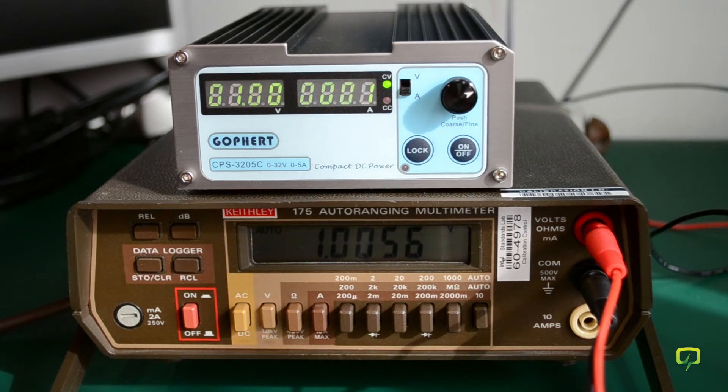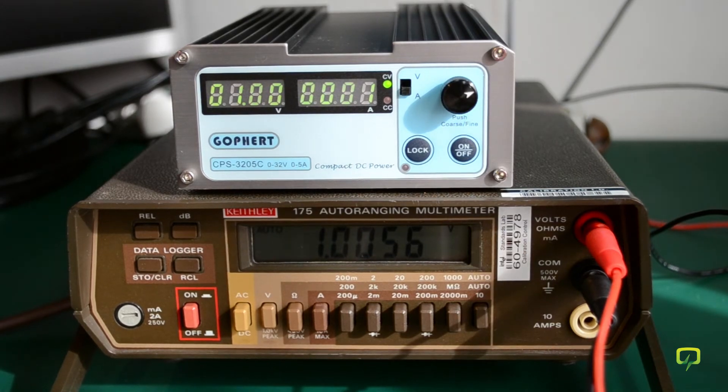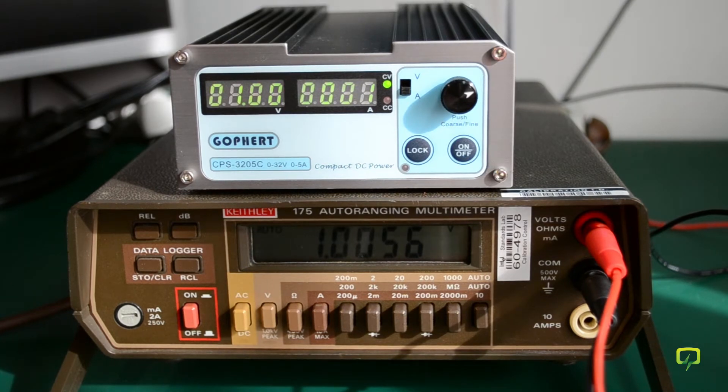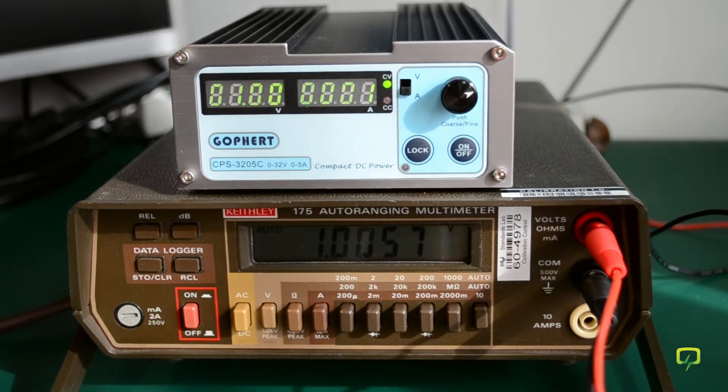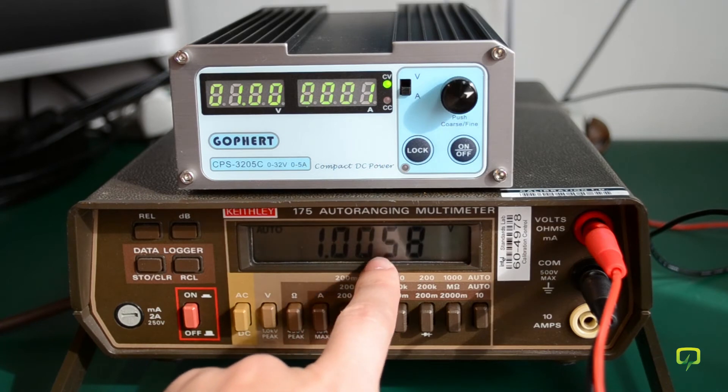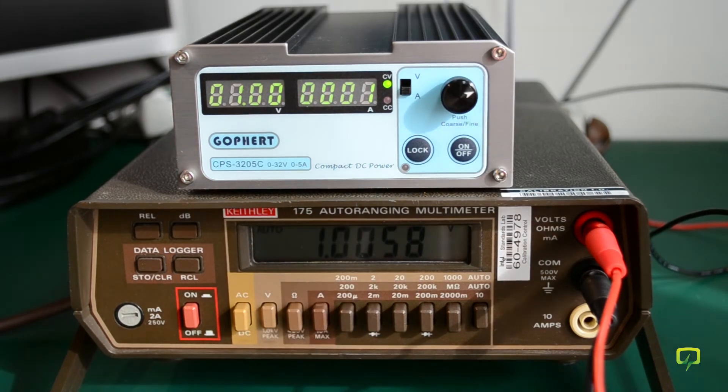Now you have to adjust the knob to set the output voltage to 1.005 volts. I'm not sure why they chose this exact value. I mean, you're basically adjusting for the 1 volt scale, so why they went for the 1.005 volt figure, I don't know. Maybe they take into account some internal circuitry. But as you can already see, the voltmeter on the power supply is quite accurate, and I can see 1.005 on the multimeter.